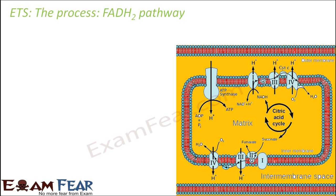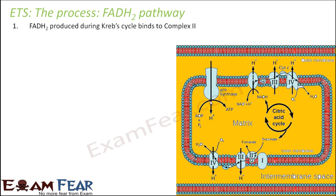The FADH2 pathway works in a similar way. The only difference is in the starting point — there is no role for Complex 1 here; instead, Complex 2 is involved. FADH2 is produced during the Krebs cycle, specifically at step 6, which involves succinate dehydrogenase — that is your Complex 2. From there, electrons are passed on to Coenzyme Q, and then the same process follows.